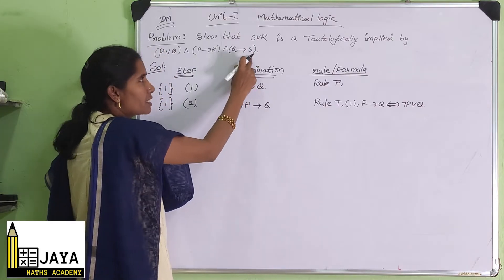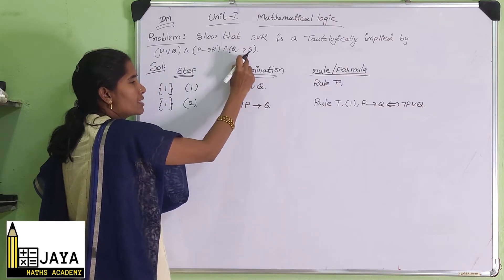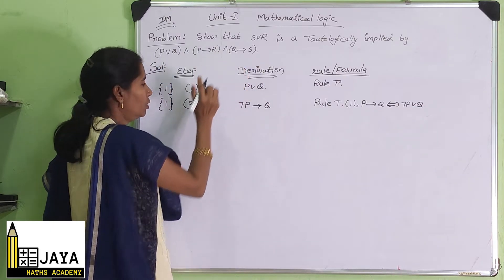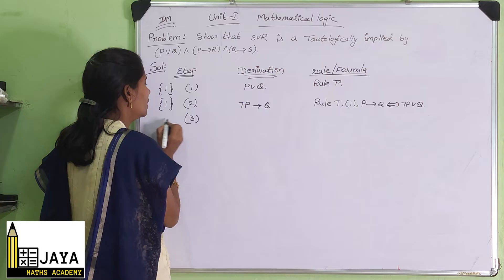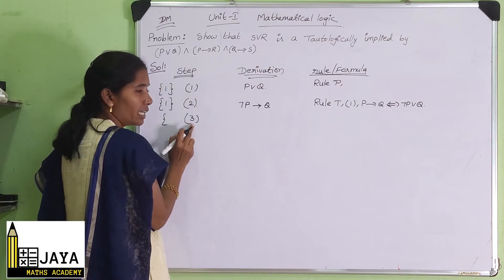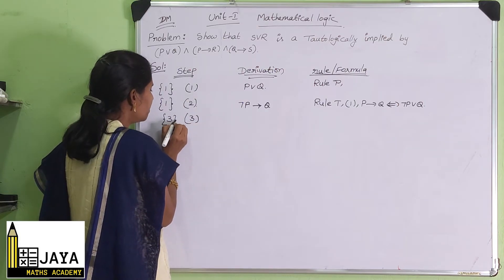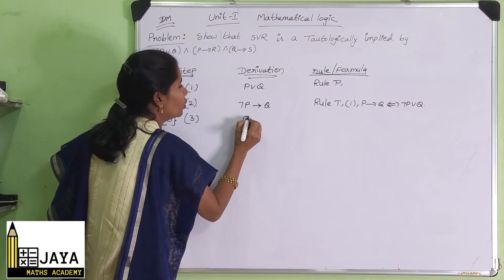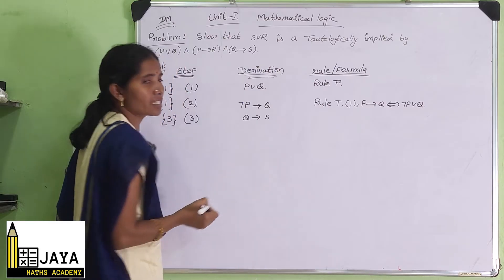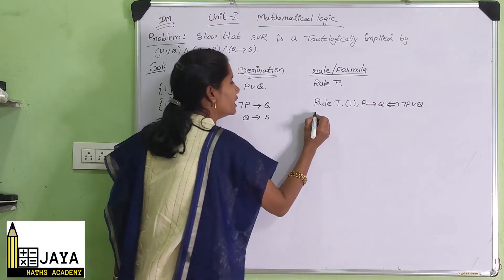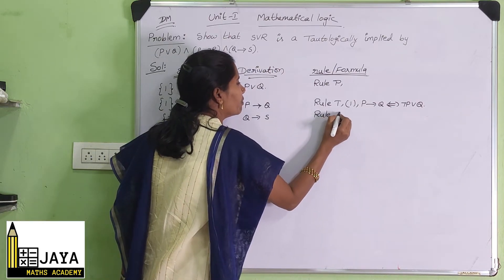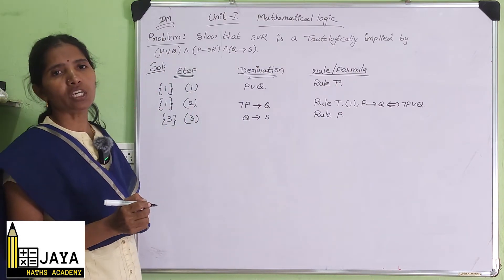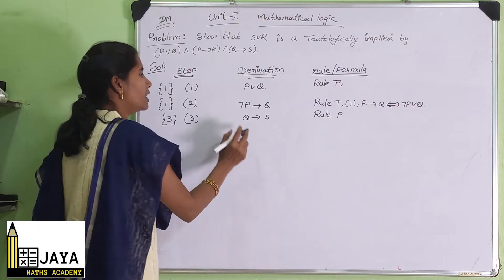Now we take another premise. Q implies S is there. So taking Q implies S as the third step — this is a new premise. Since it is a premise, we write Rule P. The premise number is 3. So step 3: Q implies S, Rule P.